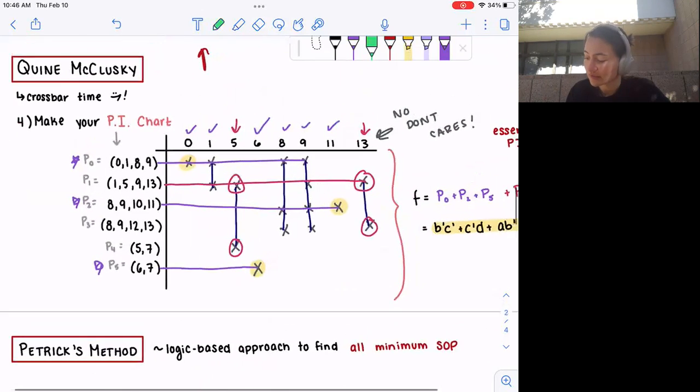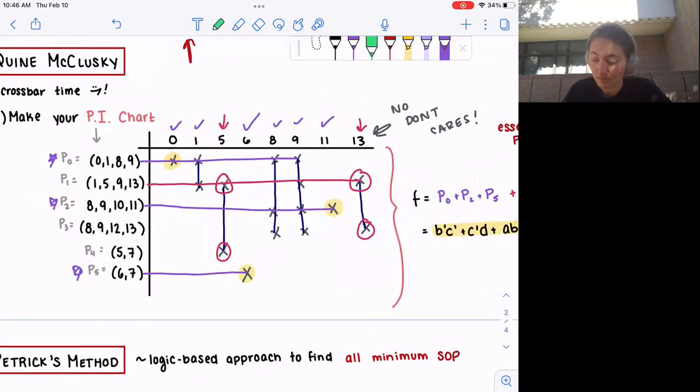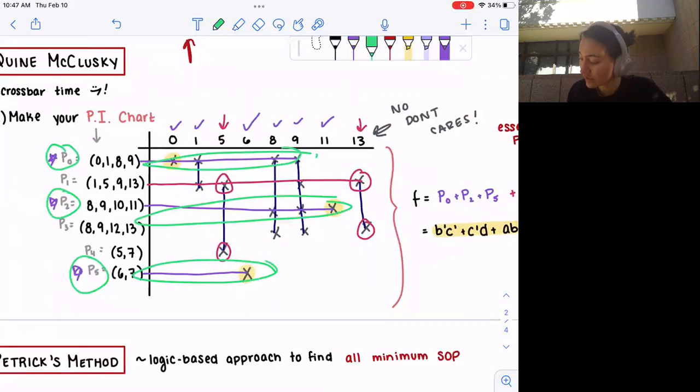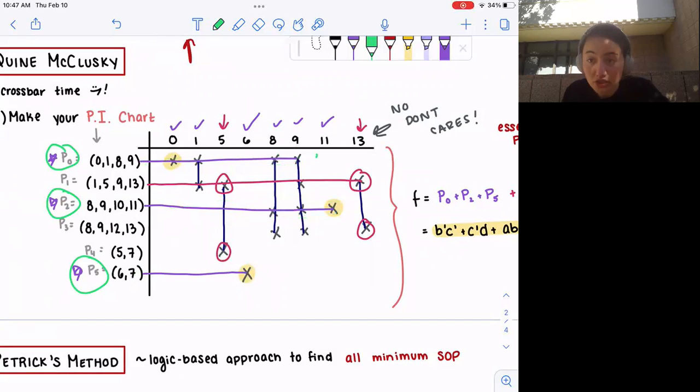For example, this chart up here has essential prime implicants P0, P2, and P5. How you would remove them in order to prepare this chart for Petrick's method is by simply removing this row, removing this row, removing this row, and also removing all of the minterms that those rows covered. That means we wouldn't have 0, 1, 6, 8, 9, 11. As you can tell, we're only left with minterms 5 and 13 to figure out some sort of coverage. That's why this problem was easy to do, but a more complicated prime implicant chart would require Petrick's method.